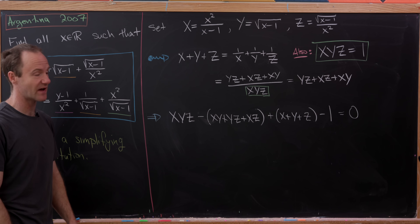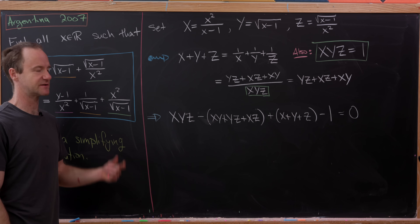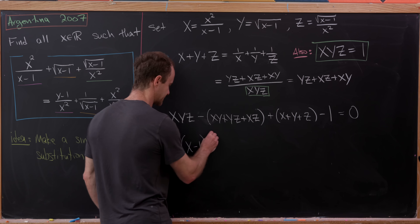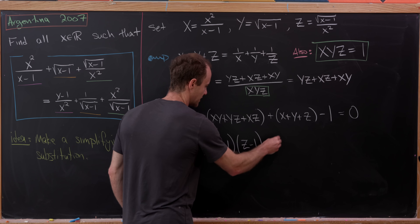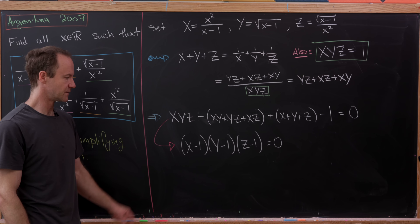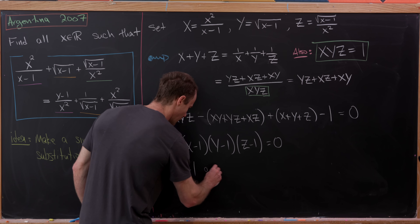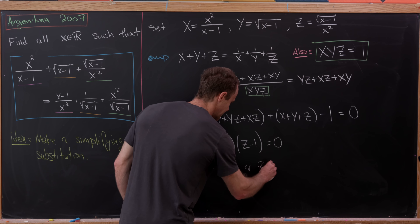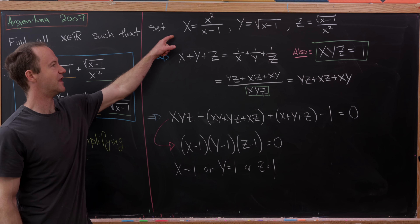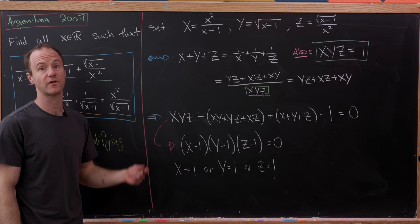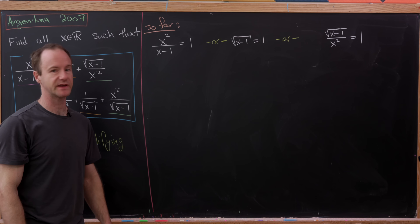Let's take our equation and write it without denominators. Giving the right-hand side a common denominator of XYZ, we get (YZ plus XZ plus XY) over XYZ. But we know XYZ equals 1, so this simplifies to simply YZ plus XZ plus XY. So the equation becomes: X plus Y plus Z equals YZ plus XZ plus XY.